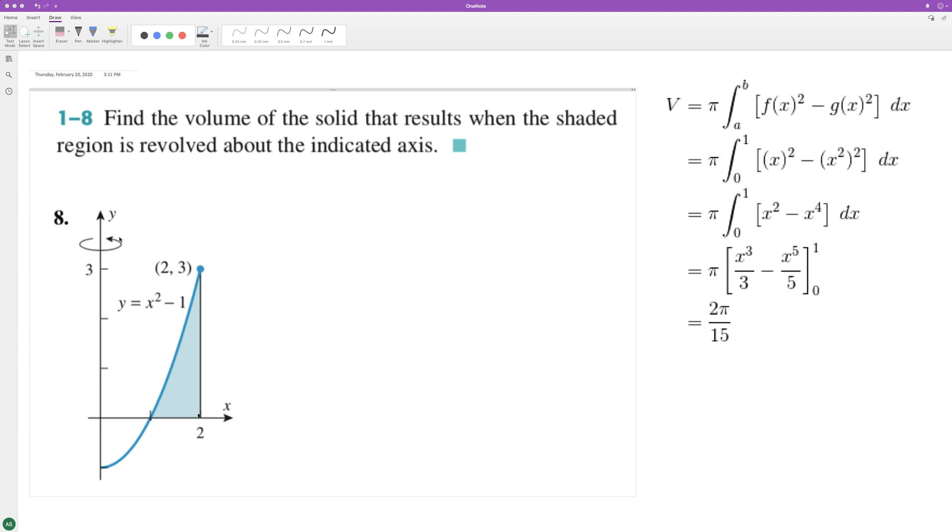When we wrap it around the y-axis, we need to solve and rearrange the equation so it's solved for x. That means x squared is going to be equal to y plus one, and then we take the square root, so we have x is equal to the square root of y plus one.